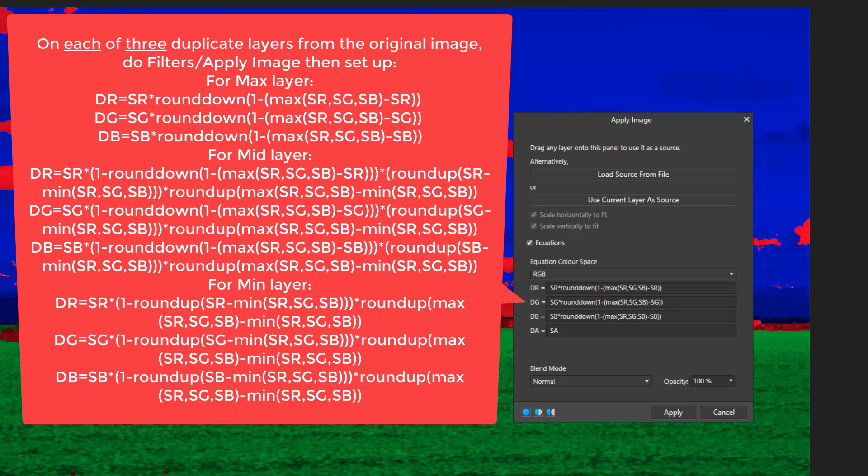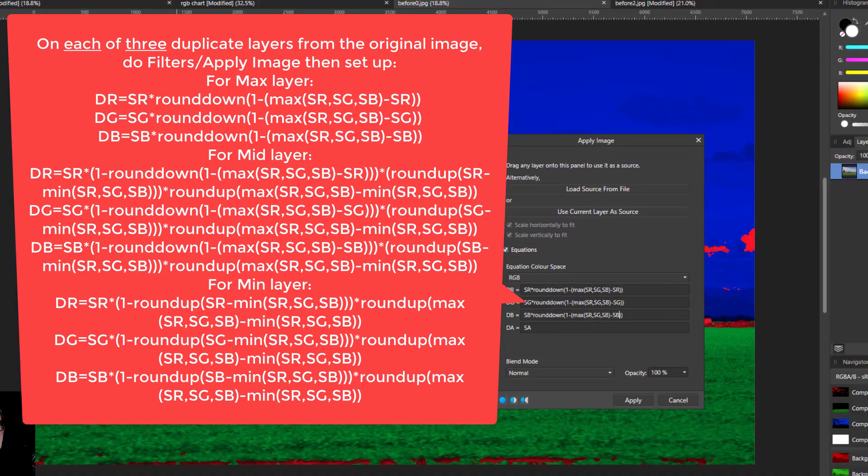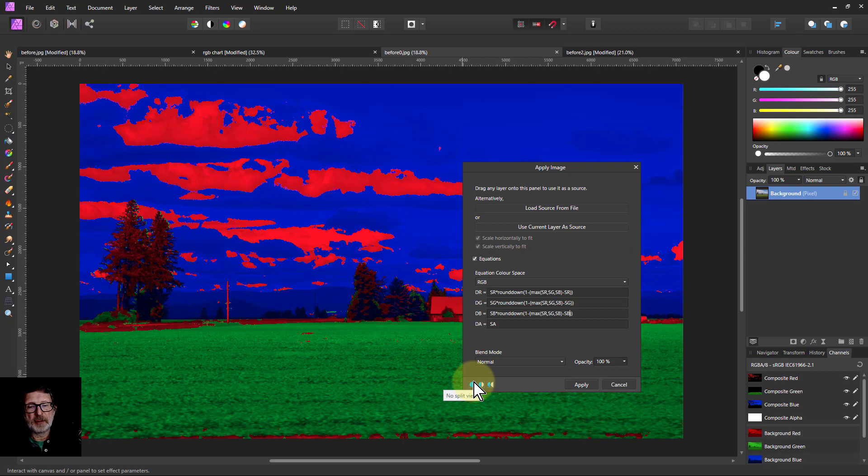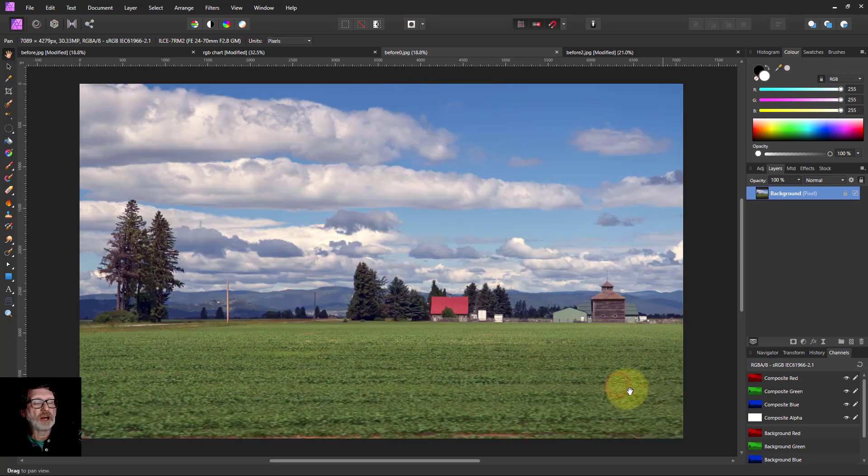You're going to see the formula up here for each of the three layers to put that in. I won't put it in because it'll take quite a long time. And then you hit apply image and you've got those three layers that we had before.